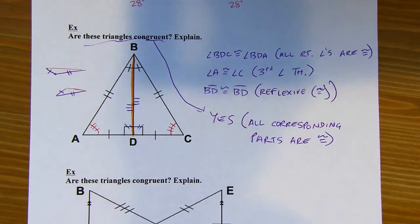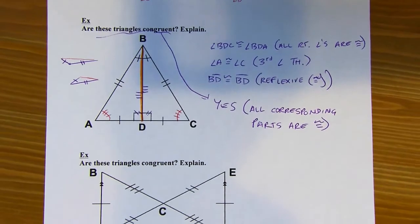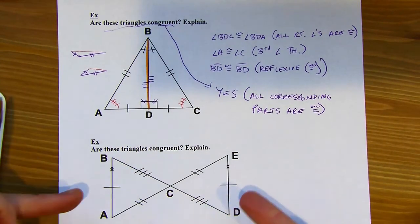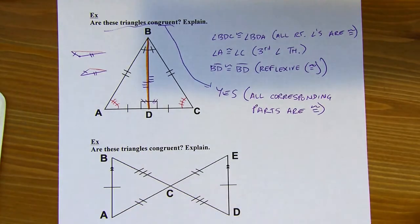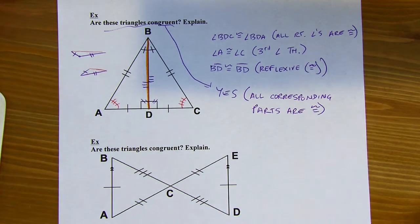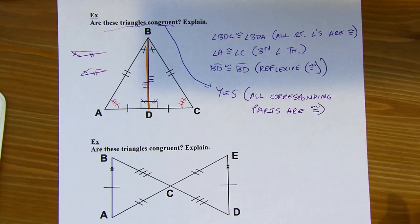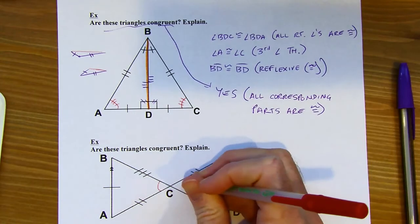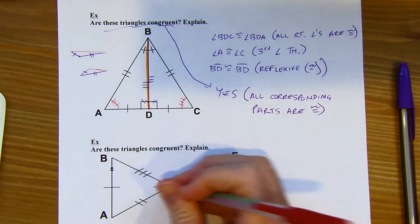Let's try another one — the same type of question. Looking at the sides, we're all set: one, two, three. We've got all three sets of congruent sides. I like to call these bow tie problems because it looks like a bow tie — they show up a lot in every geometry text. Now I want to start thinking about the angles; I don't have any angles marked yet.